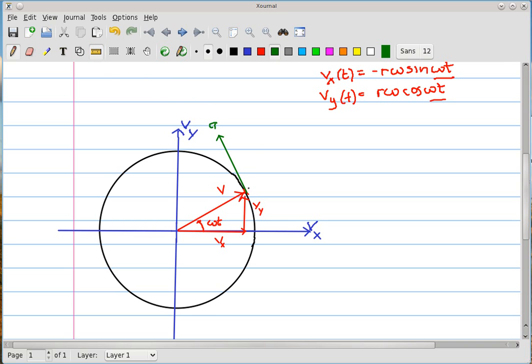And this acceleration vector has both x and y components. So, there's the y component, there is the x component, so we'll label that a sub x, a sub y.